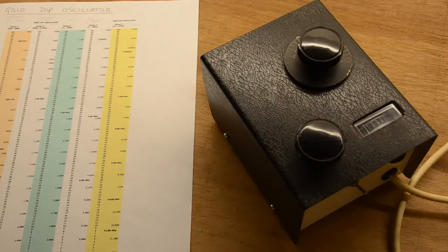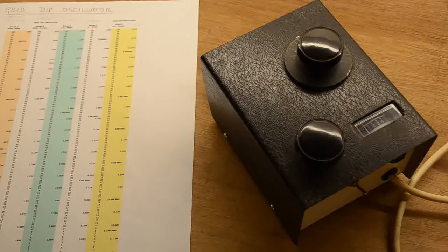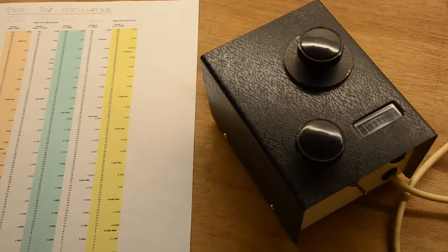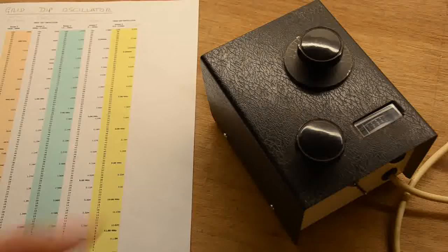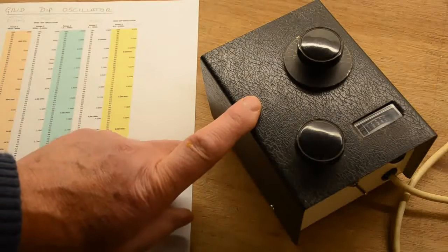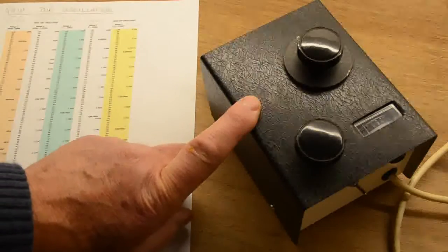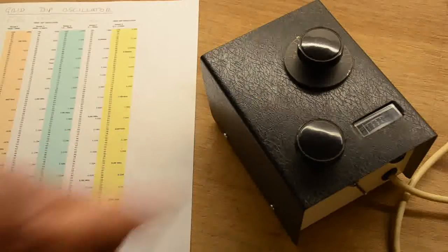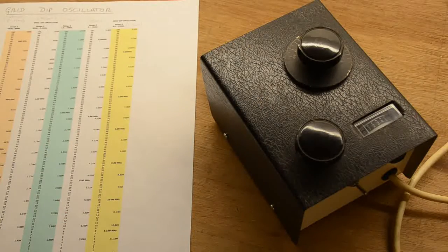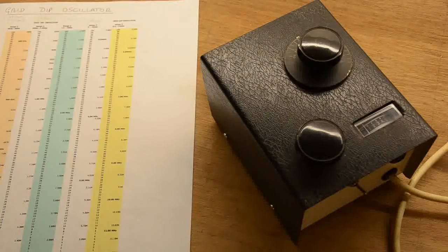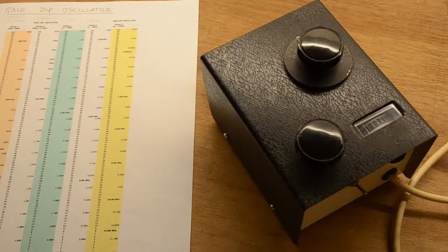So there we go, that's two tests we've done on our grid dip oscillator showing it's quite a useful piece of kit. I will put the details of the circuit I used on the screen for about five or six seconds, and if you want to do a screenshot, you can look at it in more detail. I hope it's of interest to somebody out there. Thanks for watching.